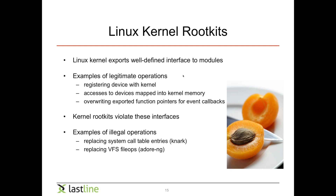The Linux kernel exports well-defined interfaces to modules. Examples of legitimate operations include registering devices with the kernel, accessing devices mapped into kernel memory, or overwriting exported function pointers for event callbacks. But kernel rootkits tend to violate these interfaces — you might replace system call table entries or replace virtual file system struct information to hide things. These are violations that should not happen, but you can just write a kernel rootkit that sits in the kernel and does these things.